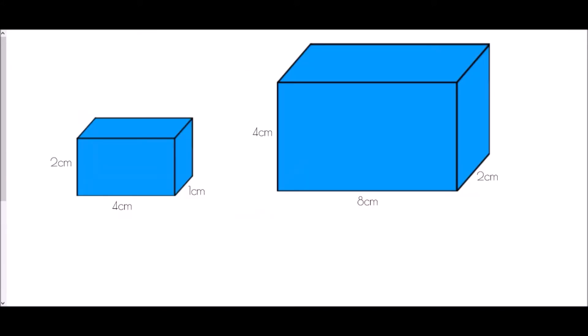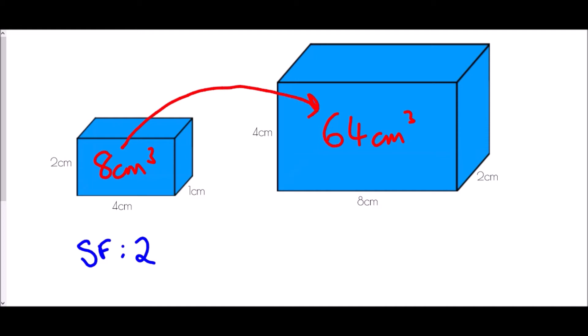So what effect does this have on volume? In this case we have two similar cuboids, and all of the sides have been multiplied by 2, so our scale factor for the length is 2. The volume of the first cuboid would be 2 times 4 times 1, which is 8 centimetres cubed. In the larger cuboid, I've got 4 times 8 times 2: 4 times 8 is 32, times 2 is 64 centimetres cubed. So what has happened to the volume? The volume scale factor — how do I get from 8 to 64? That is times 8.